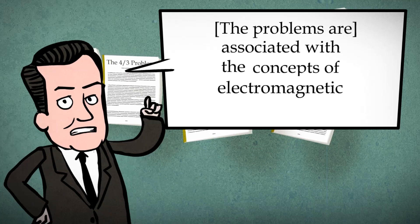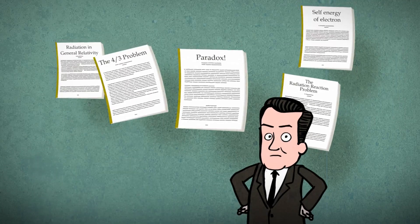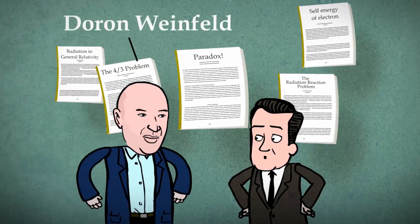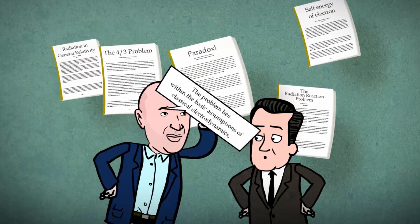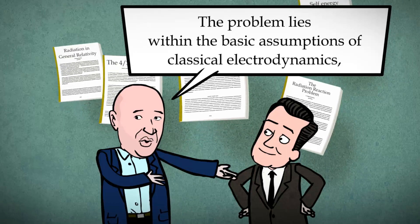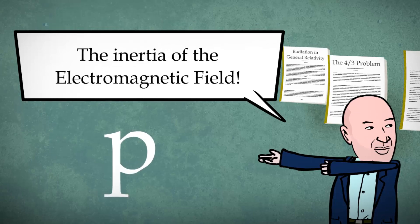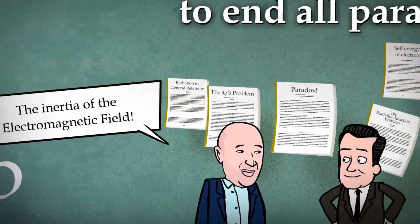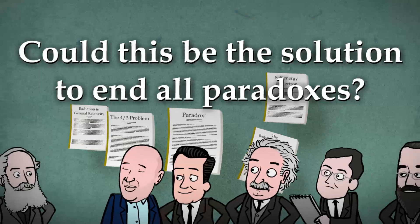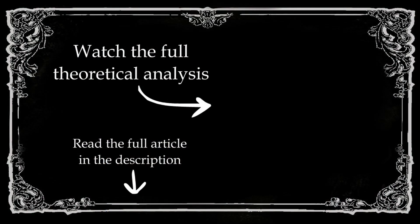A theoretical physicist, Doran Weinfeld, also assumes that the problem lies within the basic assumptions of classical electrodynamics, which are missing a key component: the inertia of the electromagnetic fields. Could this be the solution to end all paradoxes? Check out our next video or read the complete article to learn more.